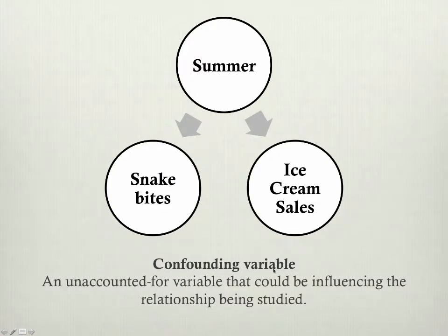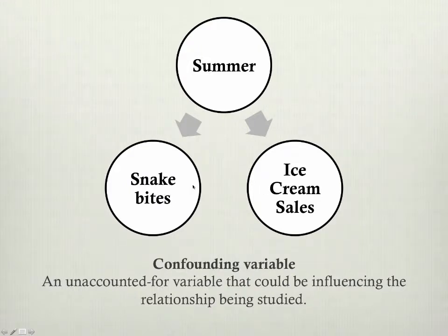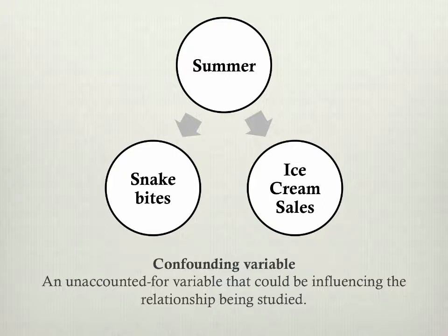The definition I would give you: a confounding variable is an unaccounted-for variable — something you haven't looked at, something you haven't measured — that could be influencing the relationship being studied. We never need to account for everything, as long as we've accounted for everything that's reasonable. If something is insanely unlikely to be influencing what you're studying, you probably don't need to worry about it. But if there's something like summer that you haven't measured or taken into account, and you're drawing a connection between snake bites and ice cream sales claiming causation, then that's an unfounded, invalid conclusion.